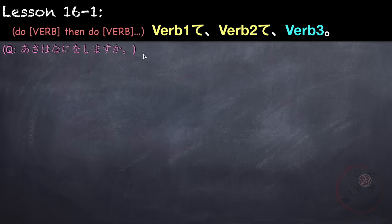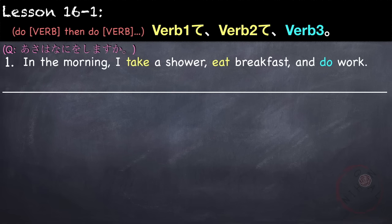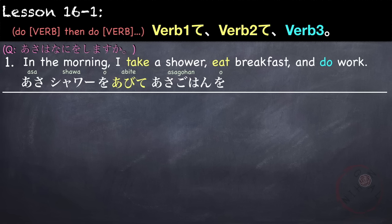For example, Asa wa nani o shimasu ka? So in the morning, what do you do? So this is a routine. For example, in the morning, I take a shower, eat breakfast, and do work. So our first verb or first action is take a shower. So we say, Asa wa, shawa o. Take a shower is shawa o abimasu. And then we will change it to te form, so it becomes abite. Our verb two is eat breakfast. So it's, asa gohan o tabemasu, becomes tabete. And then lastly, do work, which is, shigoto o shimasu.